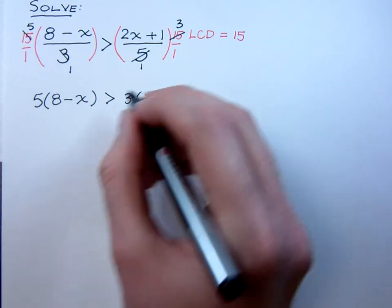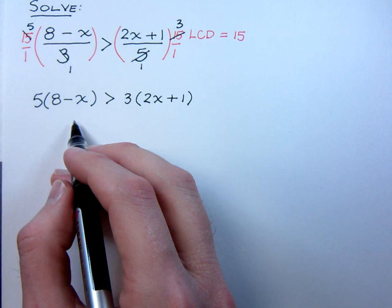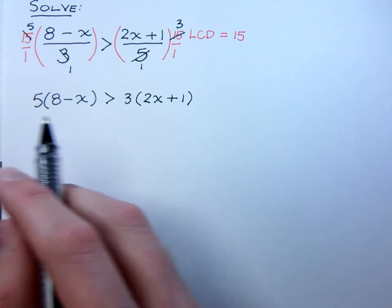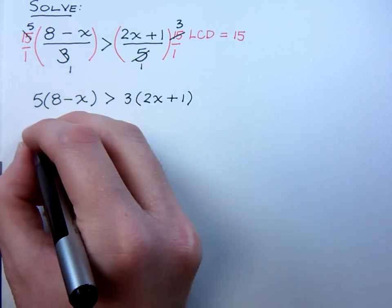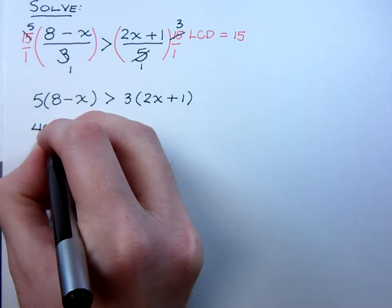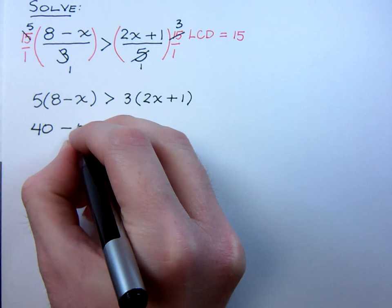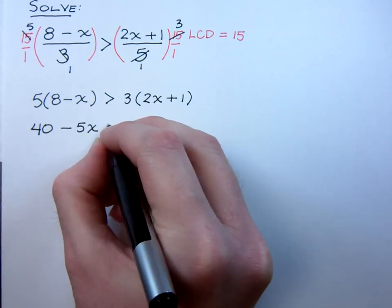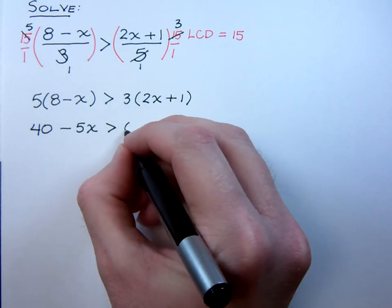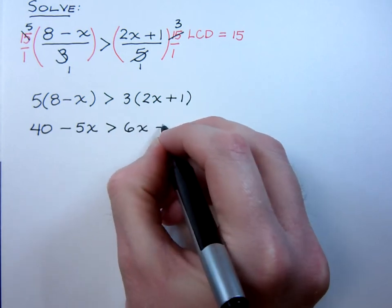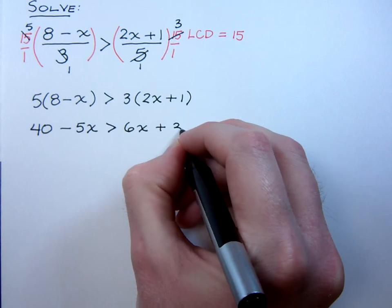And now it's just a matter of using the distributive property and then combining like terms, moving things from one side to the other with the addition property and then we're going to be done. So let's go ahead and distribute. This gives me 40 minus 5x is greater than, distribute over here on the right side, that's 6x plus 3.